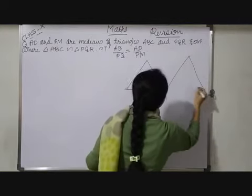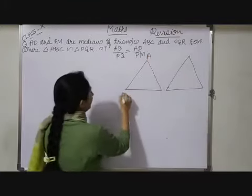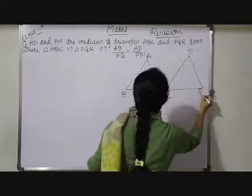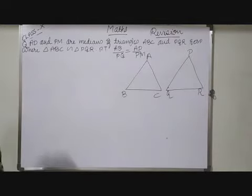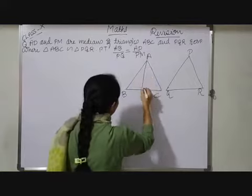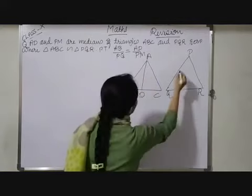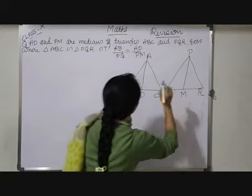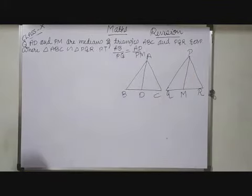ABC and here PQR. Here, AD and PM are medians, so this is AD and here we have PM of triangle, this.